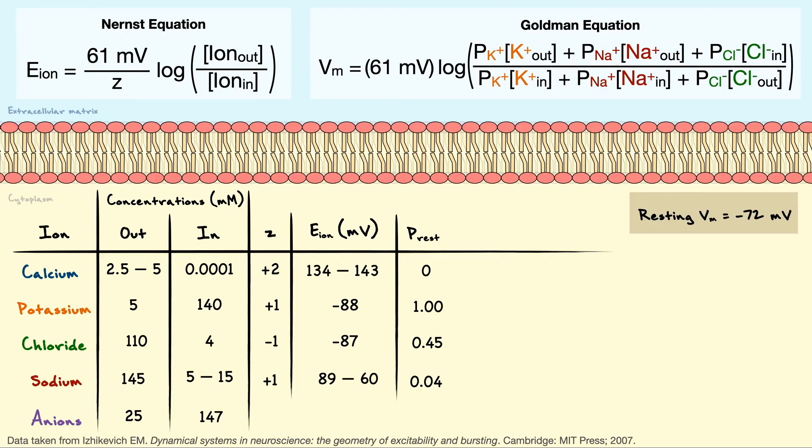As a quick note, regardless of if you use 5 or 15 for the intracellular sodium concentration, the resting membrane potential will only change by a few decimal because of sodium's very low permeability at rest, so we can essentially neglect the range of sodium.